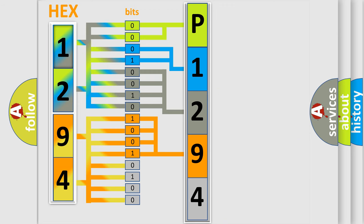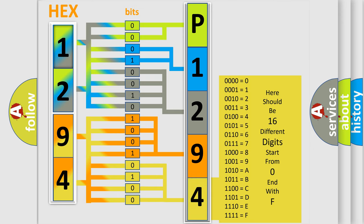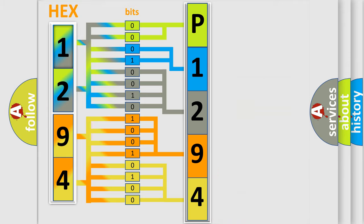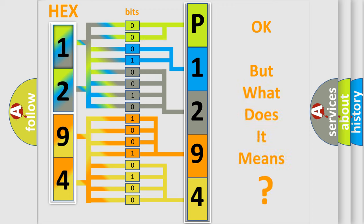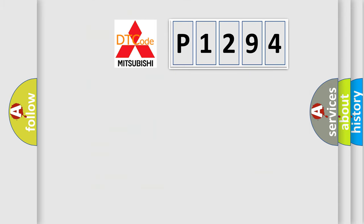A single byte conceals 256 possible combinations. We now know in what way the diagnostic tool translates the received information into a more comprehensible format. The number itself does not make sense to us if we cannot assign information about what it actually expresses. So, what does the diagnostic trouble code P1294 interpret specifically for Mitsubishi car manufacturers?